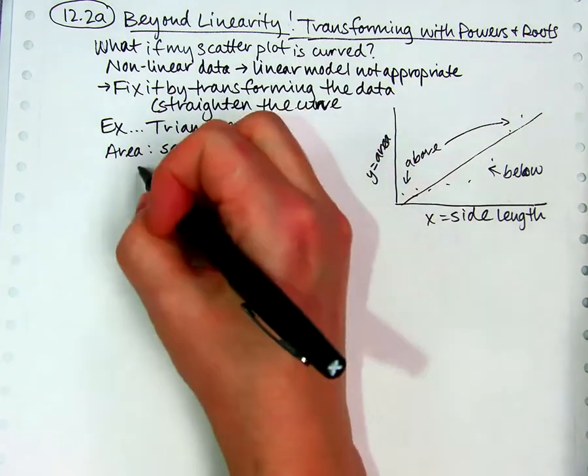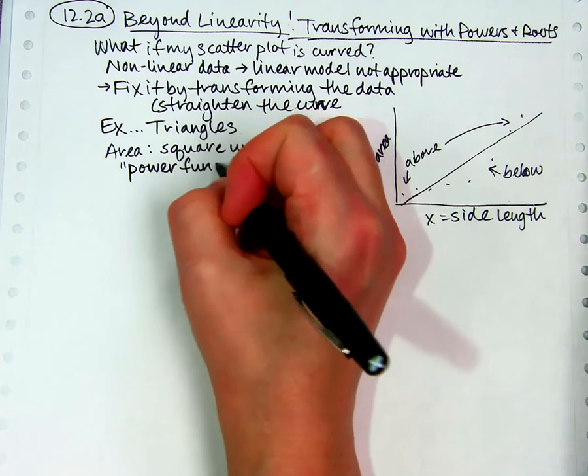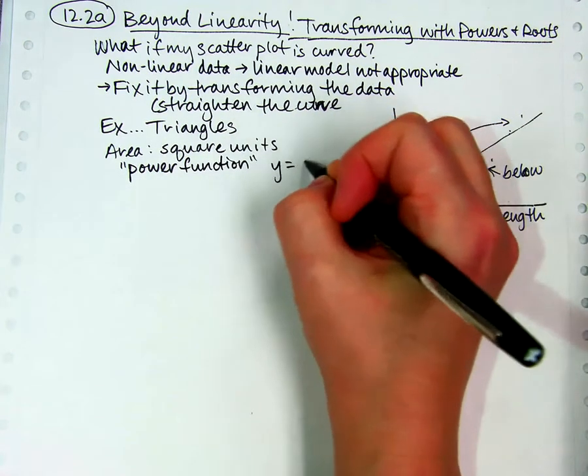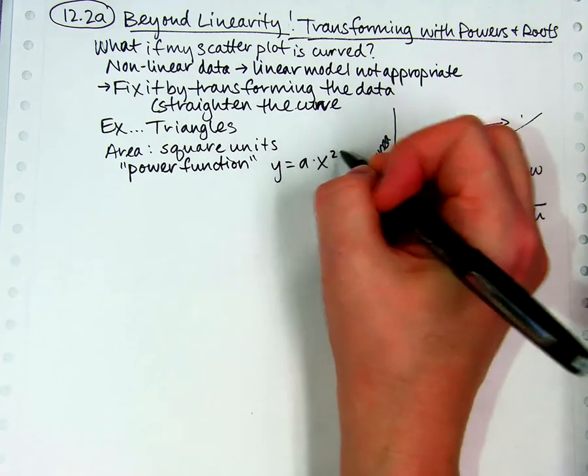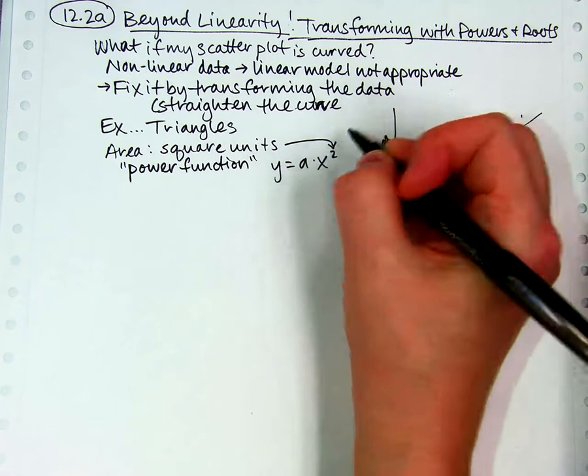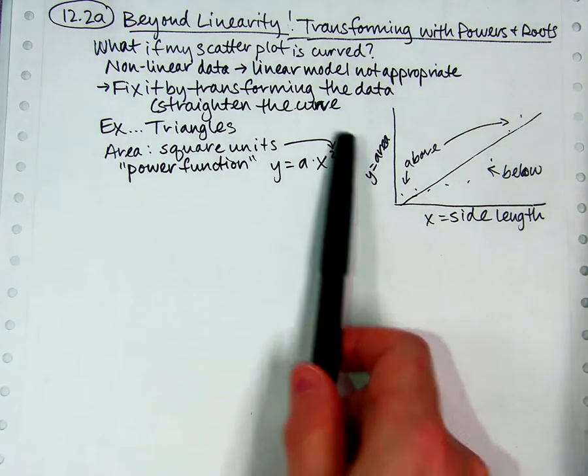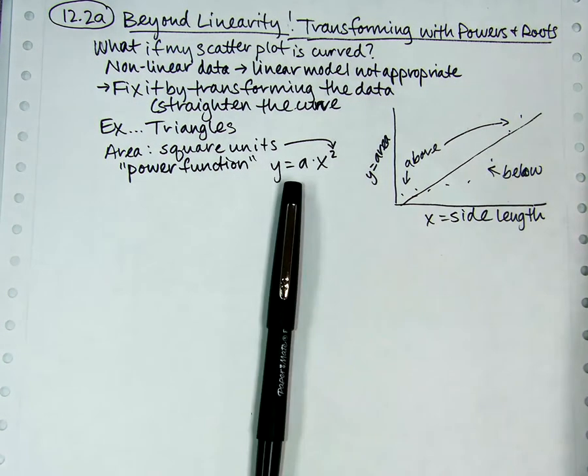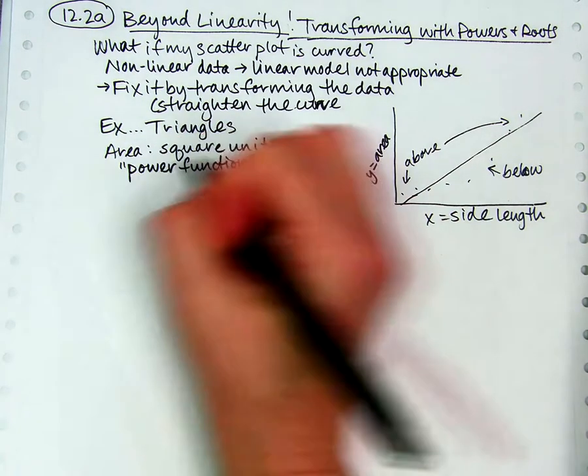So that means that it's based on what's called a power function that you may have learned in algebra 2 or maybe pre-calculus. A power function looks like y equals a times x squared or a times x to the something. It might not always be squared, but in this case, it's square units. I'm going to assume that my area is based on square units somehow. And I could use that. I could fit this type of equation to it, which is something you might have learned probably in pre-calc. But in stats, like I said, we usually transform the data.